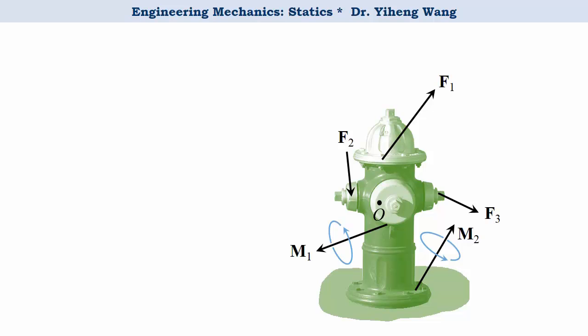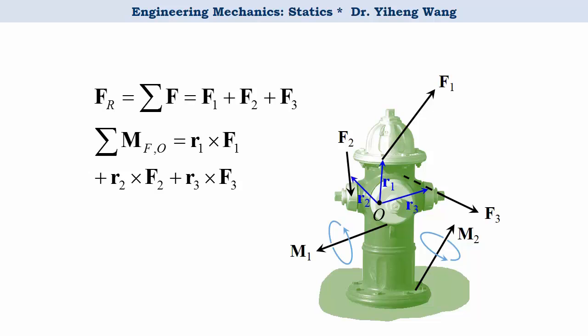The single force is simply the resultant force of all these three original forces and is easily calculated through vector addition. For the resultant moment, we need to first calculate the individual moment caused by each force about point O, add them together, and then add all of the free couple moments together, in this case only two, M1 and M2. And then we add the total moment caused by the forces and the total couple moments together, and this is the total moment at point O.